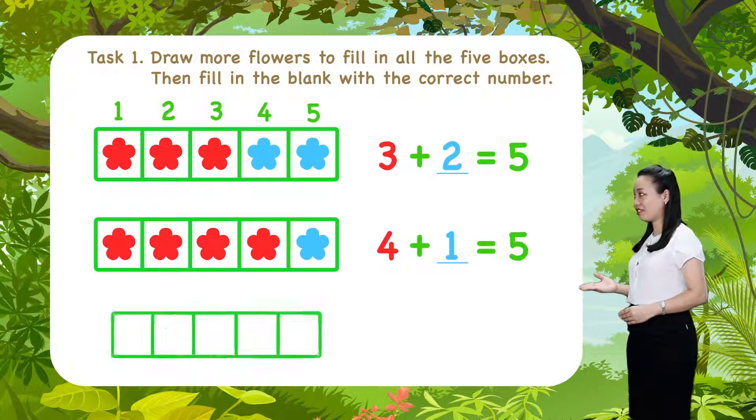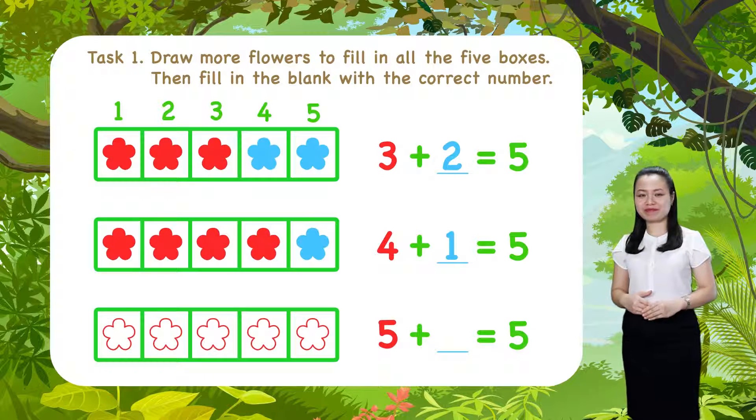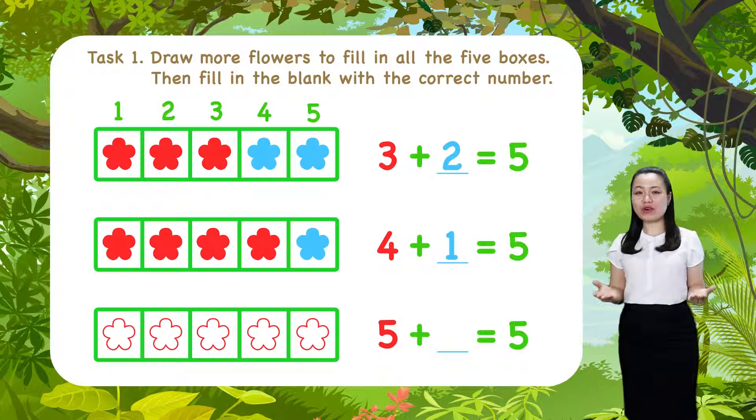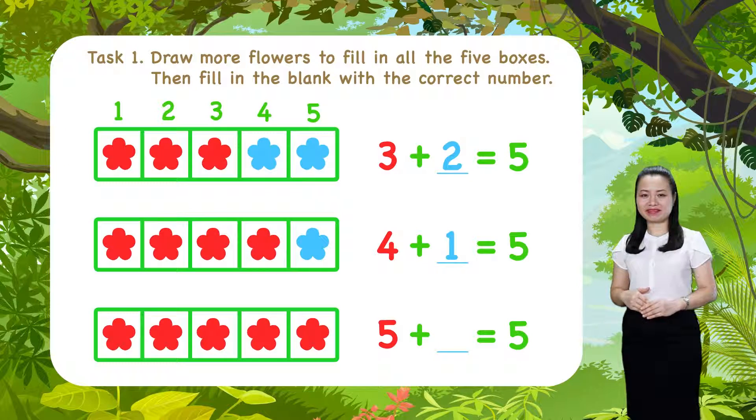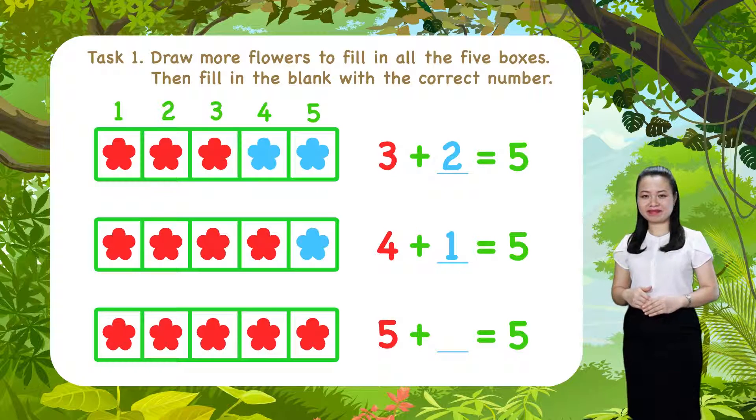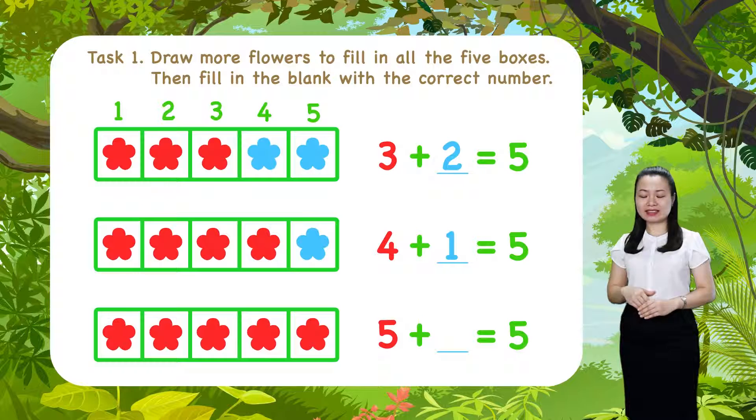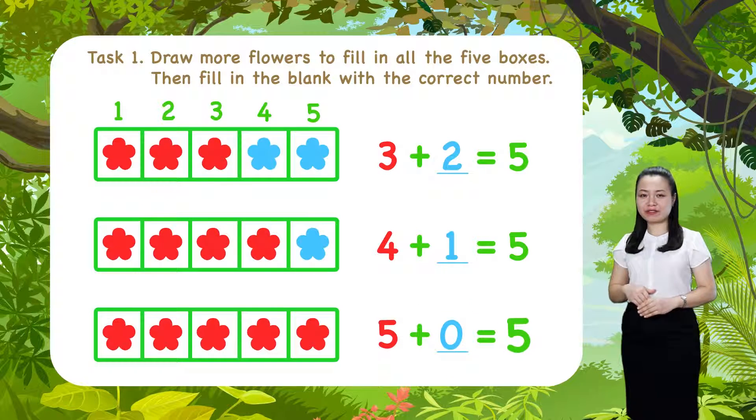The last row. Here, we have five flowers. They fill in all the five boxes. Let's color them red. None of the boxes is empty. And you'll see, five plus zero equals five.